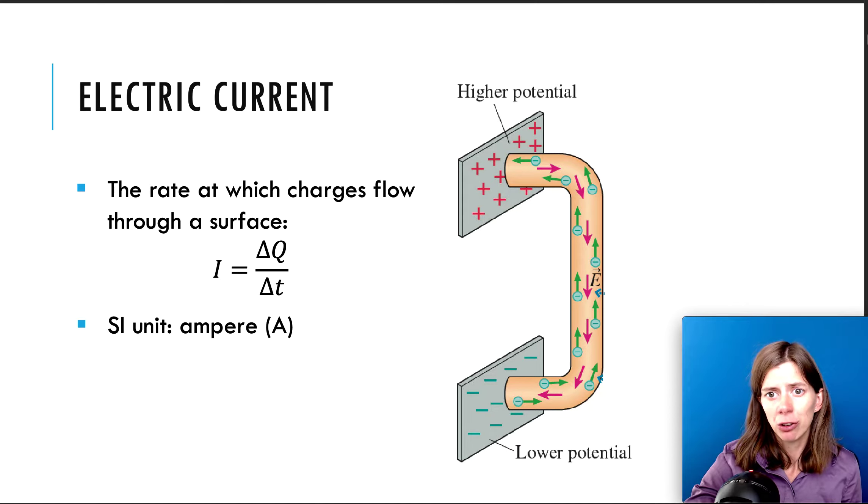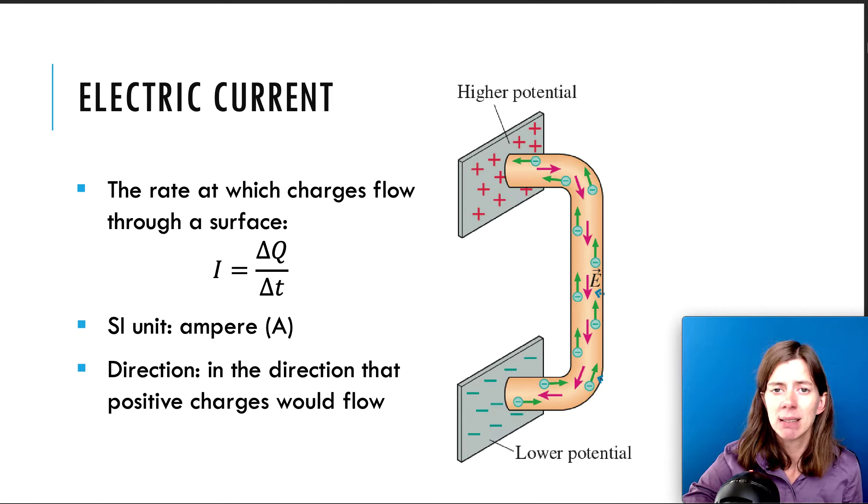And then one more note about the direction of current is that it's defined to be in the direction that positive charges would flow. Now, we know that it's really the negative charges or the electrons that are moving. So in this picture here, we see a positive plate, a negative plate. And we know that the negative charges would move up towards that positive plate. That's really the way that the charges are flowing. But convention is to look at the way positive charges would be flowing. So, positive charges would flow down towards a negative plate. So the direction of current is going to be in the direction of the movement of the positive charges, even though in reality, the electrons are moving in the opposite direction.